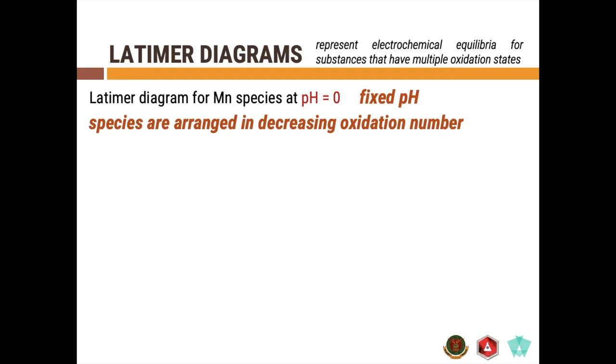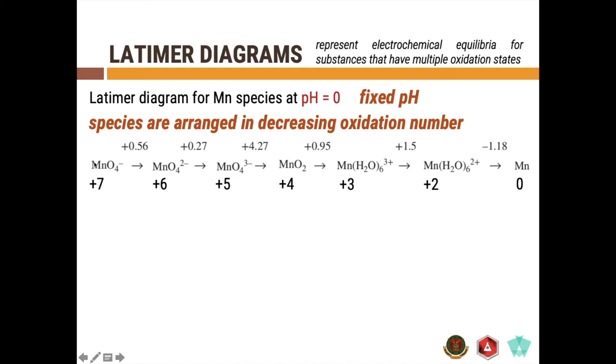The species are arranged in decreasing oxidation number. So, you can see from this, this is the actual Latimer diagram for the different manganese species. You see here that you have your permanganate in the plus seven, all the way up to the elemental manganese with a zero oxidation state. And then you have the numbers here, which correspond to the standard reduction potential of the given species written beside it.